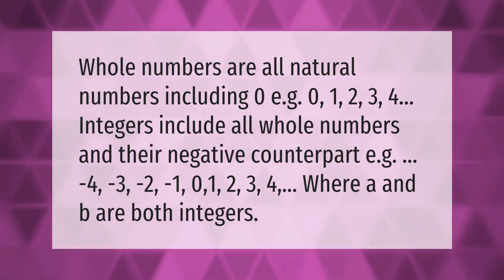Whole numbers are all natural numbers including zero, e.g., 0, 1, 2, 3, 4... Integers include all whole numbers and their negative counterpart, e.g., -4, -3, -2, -1, 0, 1, 2, 3, 4... where a and b are both integers.